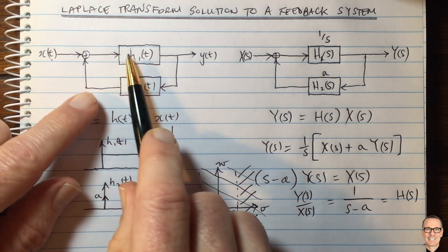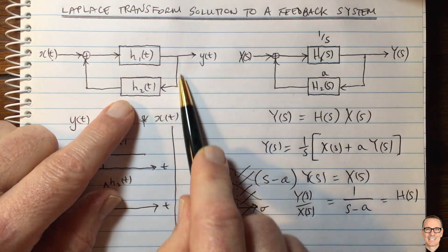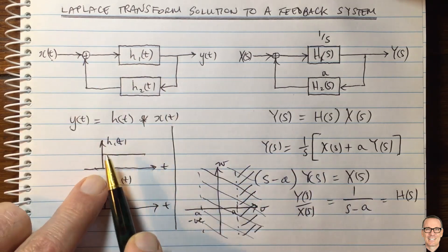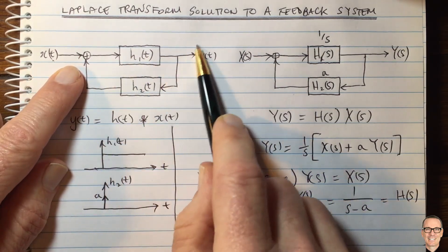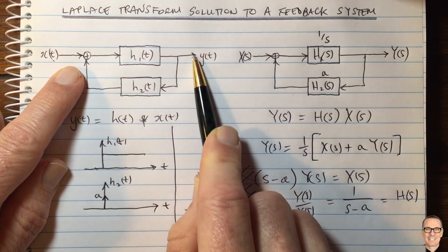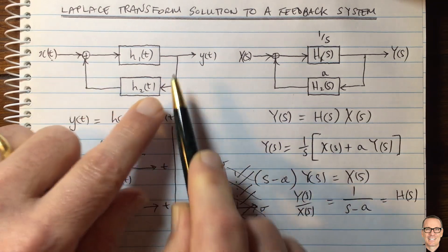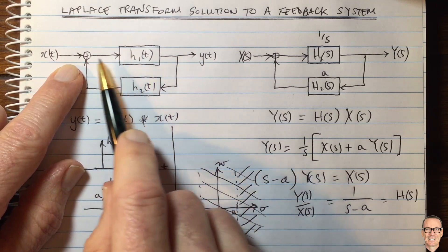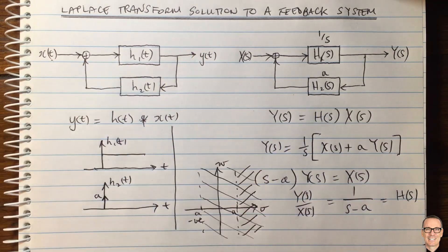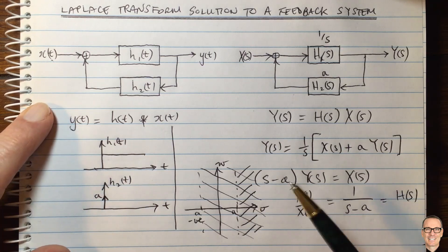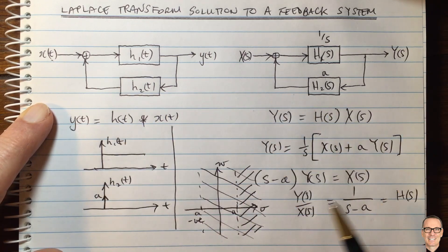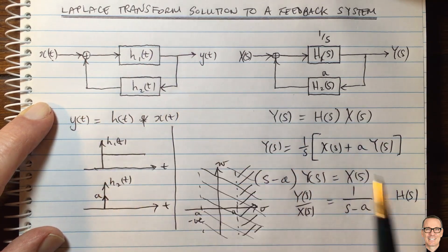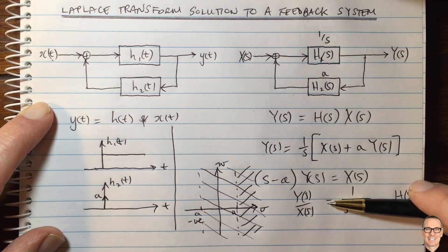This makes intuitive sense: if you feed the output back positively into an integrator, the output keeps adding and adding, increasing without bound — an unstable scenario. With negative feedback, there's a reduction coming back into the integrator, keeping the system stable. So this is an example of where we can work out the overall impulse response by taking the inverse Laplace of 1/(S minus A) in a simple way using the Laplace transform.